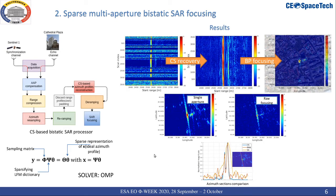In this slide we present the proposed processing flow for such a multi-aperture acquisition, and in the bottom part of the processing flow the compressive sensing framework matrices involved are depicted. The Phi matrix represents the sampling matrix, and in our case is a partial identity matrix. The sparsifying dictionary used in our case is constructed using a linear frequency modulated signal, whereas for the reconstruction of the azimuth profiles the proposed method employs an efficient greedy solver called orthogonal matching pursuit.